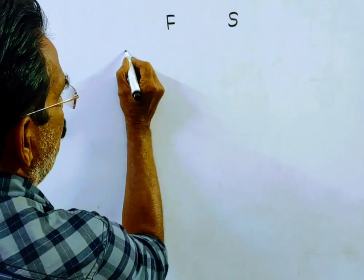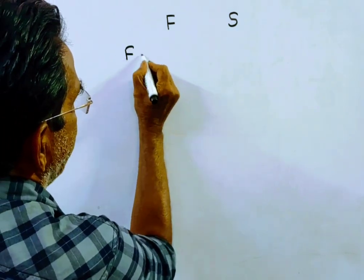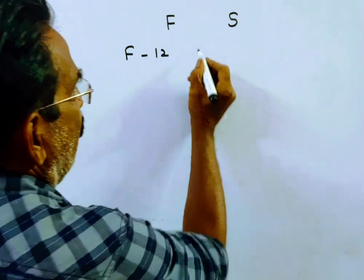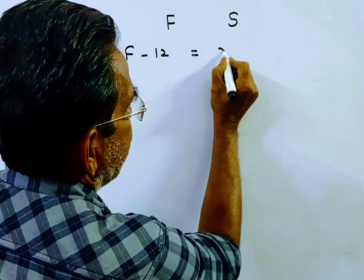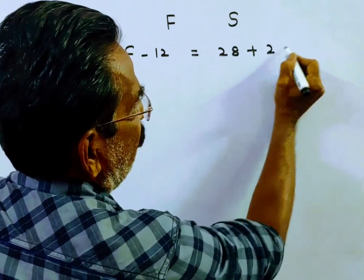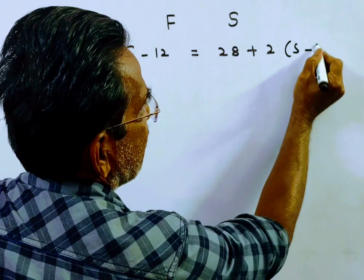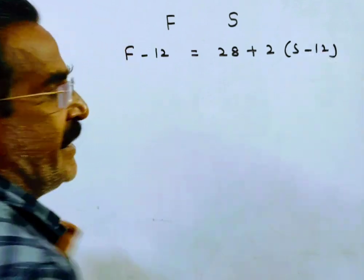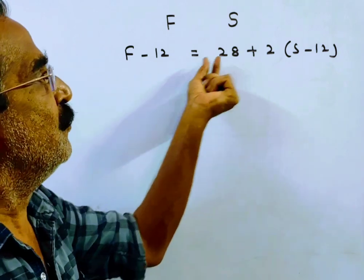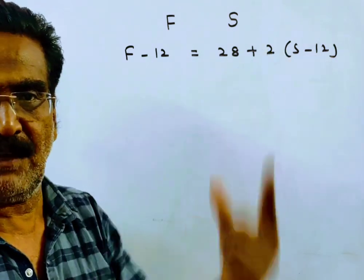father was 28 years more than twice the age of his son. Son will be S minus 12. So, F minus 12 is equal to 28 plus 2 into S minus 12.